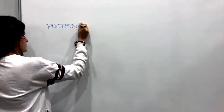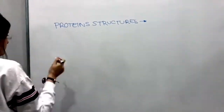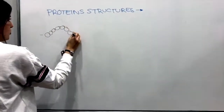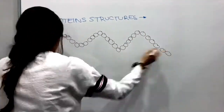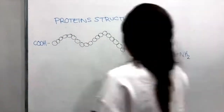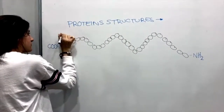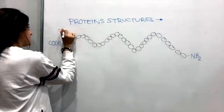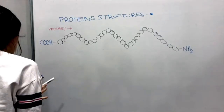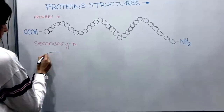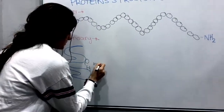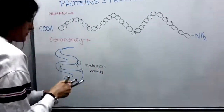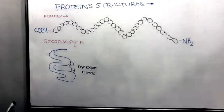The primary structure of a protein refers to the sequence of amino acids in the polypeptide chain. It is held together by peptide bonds that are made during the process of protein biosynthesis. The two ends of the polypeptide chain are referred to as the carboxyl terminus and the amino terminus. Secondary structure refers to highly regular local sub-structures on the actual polypeptide backbone chain.